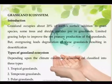Grasslands occupy comparatively a smaller area — roughly 19 to 20 percent of Earth's surface. The various components of a grassland ecosystem are as follows. Depending upon the climate conditions, grassland ecosystems can be classified into three types: tropical grasslands, temperate grasslands, and polar grasslands.